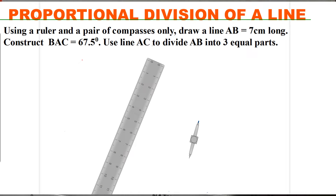Hello and welcome to the lesson, Proportional Division of a Line. The question is: using a ruler and a pair of compasses only, draw a line AB equal to 7 cm long, construct angle BAC which is 67.5 degrees, and use line AC to divide AB into 3 equal parts.